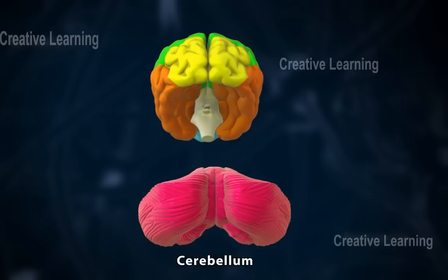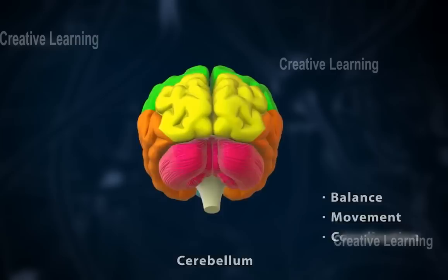The cerebellum is located in the back of the brain, just below the cerebrum. It controls balance, movement, and coordination.